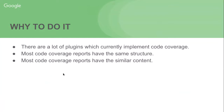The third reason is most coverage reports have similar content. For example, most code coverage reports have attributes like covered lines, missed lines, covered branches, and missed branches. So most code coverage reports have similar content. This is why we need to have a code coverage API plugin for all of those code coverage tools.